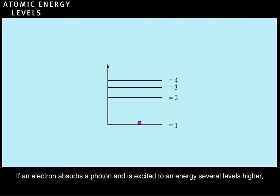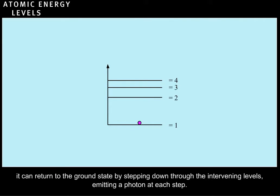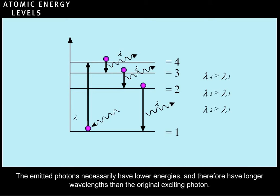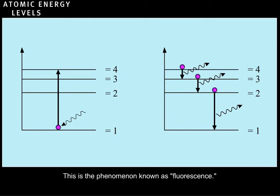If an electron absorbs a photon and is excited to an energy several levels higher, it can return to the ground state by stepping down through the intervening levels, emitting a photon at each step. The emitted photons necessarily have lower energies and therefore have longer wavelengths than the original exciting photon. This is the phenomenon known as fluorescence.